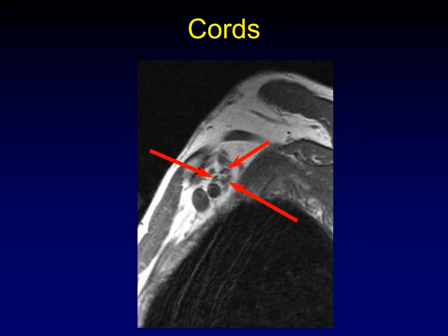Here are the cords. Sometimes it's really hard to make these out as individual structures, but here you can see the posterior, median, and lateral cords. Sometimes they just look like discrete nerves recombining and twisting around the artery, and that's fine.